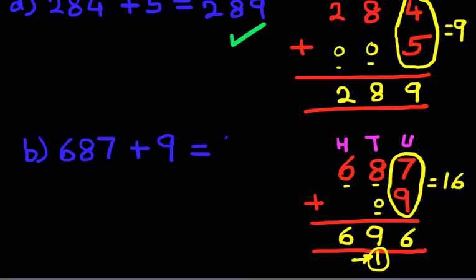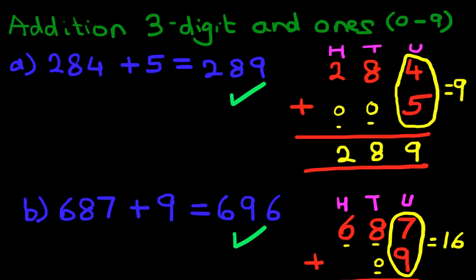687 plus 9 is 696. That is correct. And that is how we do addition of three-digit numbers and ones using the vertical format.